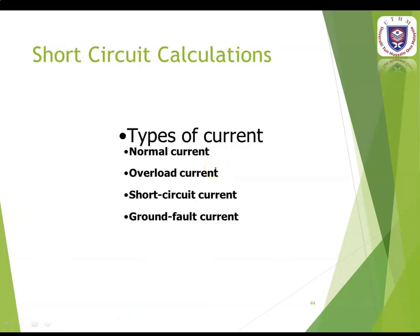We continue our lecture. Before this we learned about voltage drop calculations. This topic covers short circuit calculations. First we need to know the types of current in the power system. There are four types: normal current, overload current, short circuit current, and ground fault current.